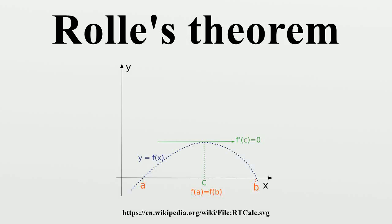In calculus, Rolle's theorem essentially states that any real-valued differentiable function that attains equal values at two distinct points must have a stationary point somewhere between them, that is, a point where the first derivative is zero.